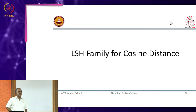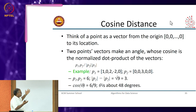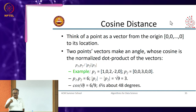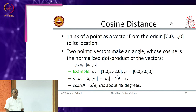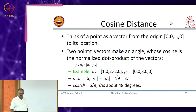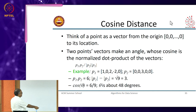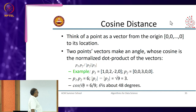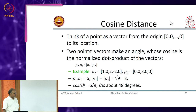People are familiar with cosine similarity. You can think of a point as a vector from the origin to the point's location, and the angle the two vectors make is the distance between the two points. The cosine of the angle is given by the normalized dot product, and then cosine inverse gives you the distance between the two vectors.